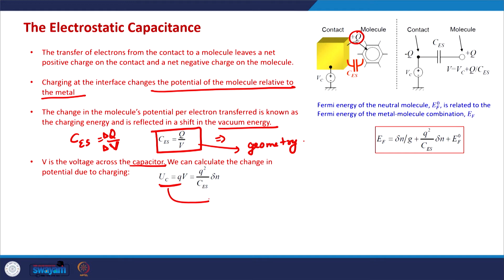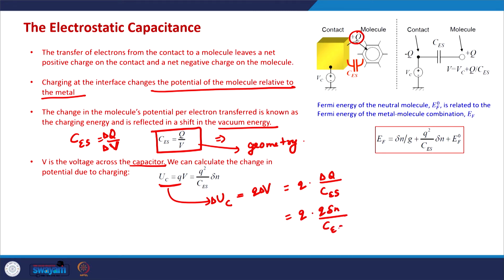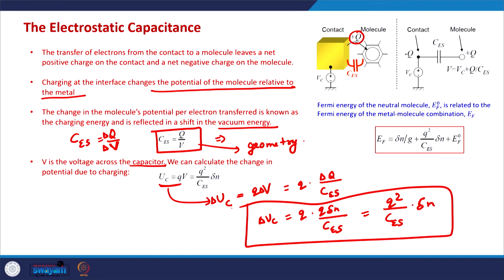The electrostatic potential energy of the system will be changed by Q × V, where δV can be written as δQ / CES and δQ = q × δN, where δN is the number of electrons transferred. So the change in electrostatic potential energy is q² / CES × δN. This corresponds to the change in electrostatic potential energy δUC. Please remember that the change in the Fermi level due to number of electrons is q² / CQ × δN, and this is the electrostatic part q² / CES × δN.